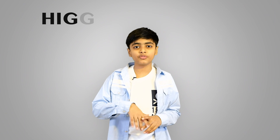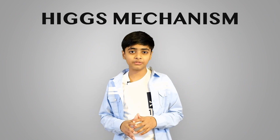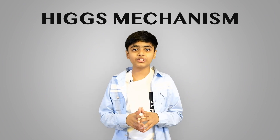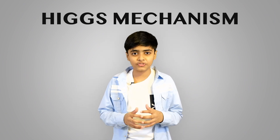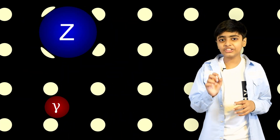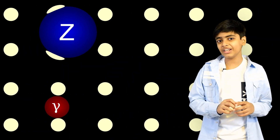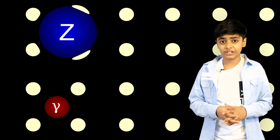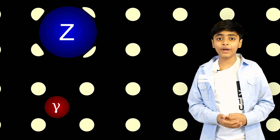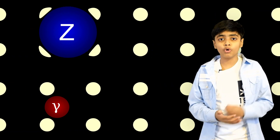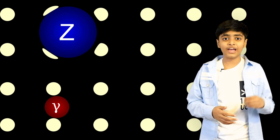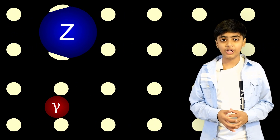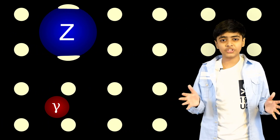But it also gives us a few mistakes. And to solve these mistakes we have the Higgs mechanism. The Higgs mechanism talks about the Higgs field and states that each particle interacts differently with the Higgs field. Therefore they have different mass. The more a particle interacts the more mass it has and vice versa. But why the difference?